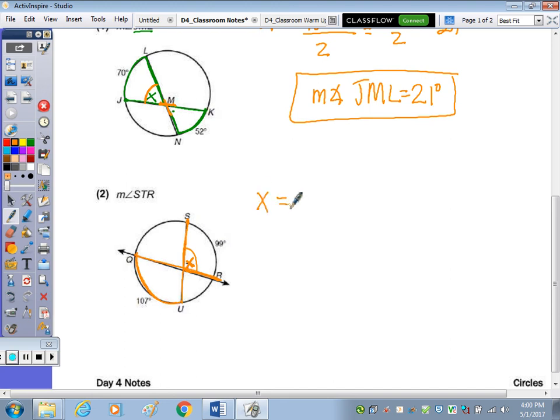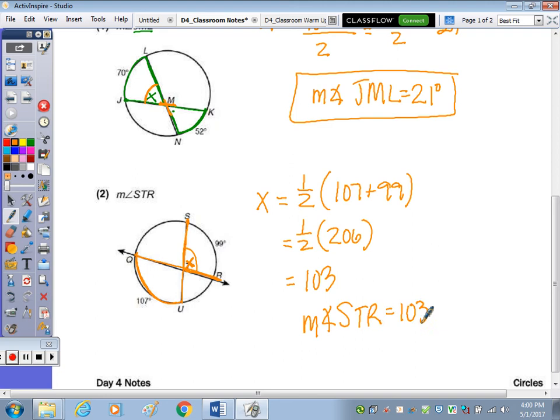It's the same theorem, I'll just write it this way, half the sum of 107 and 99. So adding first 107 and 99, we get 206. And half of that, we get 103. So the measure of angle STR is 103 degrees.